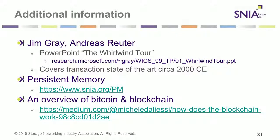Some brief additional information. The papers I mentioned: Jim Gray and Andreas Reuter wrote a paper on transactions — there's a PowerPoint on Microsoft's website covering the state of the art from around 2000, well worth reading as a historical perspective on transactional systems. On persistent memory, SNEA is doing a lot of work and you'll find that link there. And there's a really good overview by Michael Dulliessi on Bitcoin and blockchain — a lot longer than this presentation and a lot more detail. I think you'll agree it's quite an interesting technology with application much wider than just cryptocurrencies. With that, over to you Paul, thank you for today.